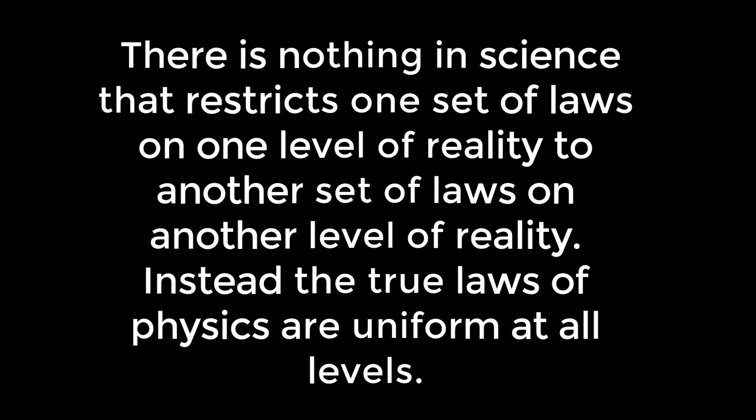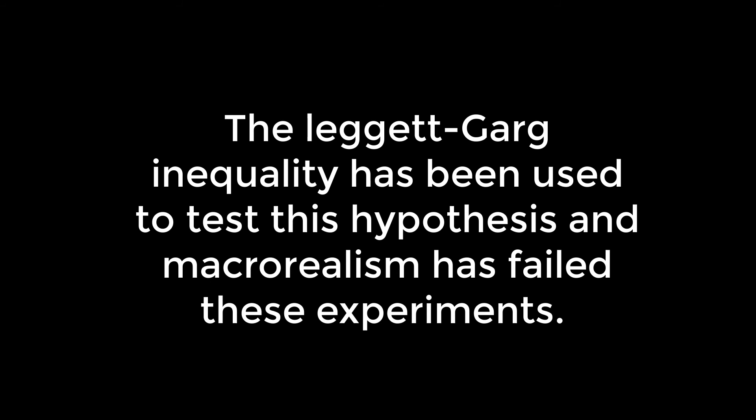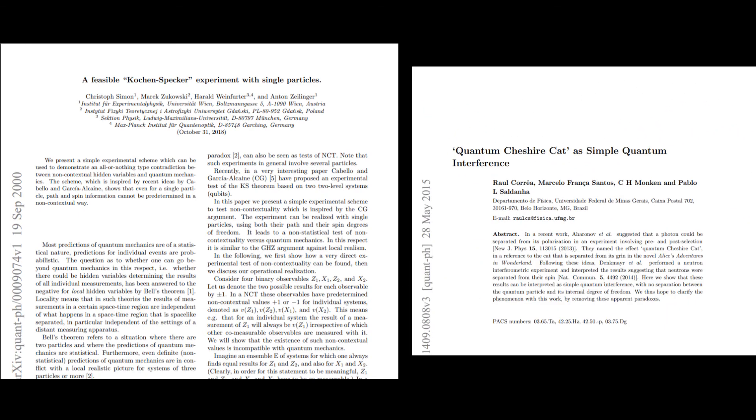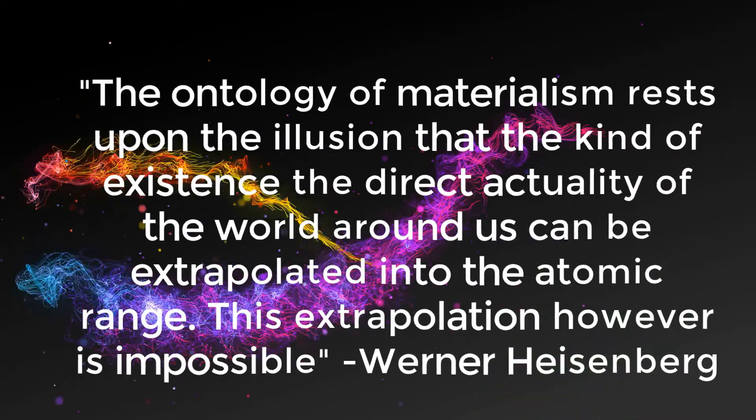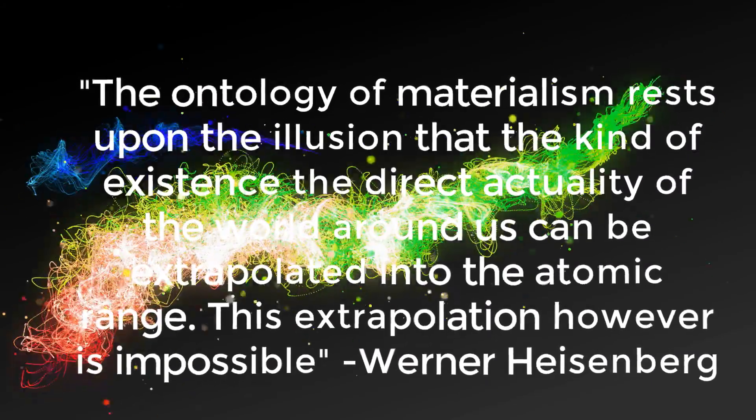Now, some try to argue that this only applies to the micro-world and not the macro-world. However, there is nothing in science that restricts one set of laws on one level of reality to another set of laws on another level of reality. Instead, the true laws of physics are uniform at all levels. Furthermore, the Leggett-Garg inequality has been used to test this hypothesis, and macro-realism has failed these experiments. More experiments, like the tests of the Kochen-Specker theorem and the bizarre quantum Schrödinger-Cat experiments, demonstrate that the concept of scientific materialism is based on ignorance of what the actual science says. As Werner Heisenberg says, the ontology of materialism rests upon the illusion that the kind of existence, the direct actuality of the world around us, can be extrapolated into the atomic range. This extrapolation, however, is impossible.